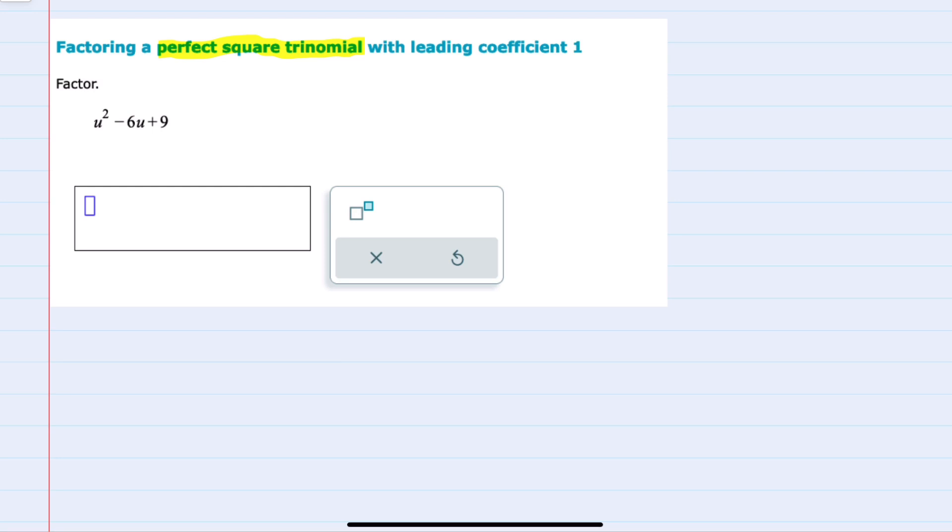And that just means that it has a specific form that says whenever the first term in the trinomial is a perfect square and the last term is a perfect square and the middle term is plus or minus two times the product of those two before they are squared, when we factor, the result will be a perfect square and the sign will be the same as that middle sign.